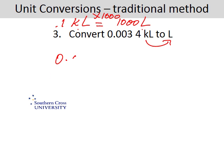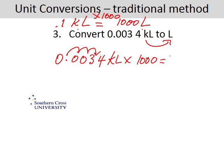So 0.0034 kilolitres times by 1,000 — timesing by 1,000 means we move the decimal point three places: 1, 2, 3 — equals 3.4 litres. So in other words, 0.0034 kilolitres is equal to 3.4 litres.